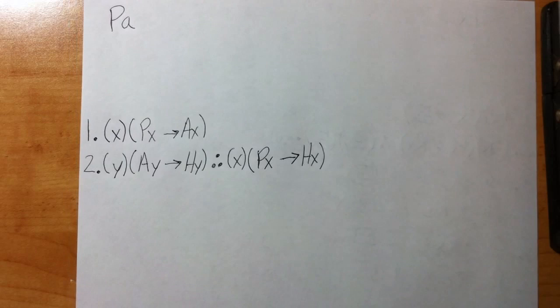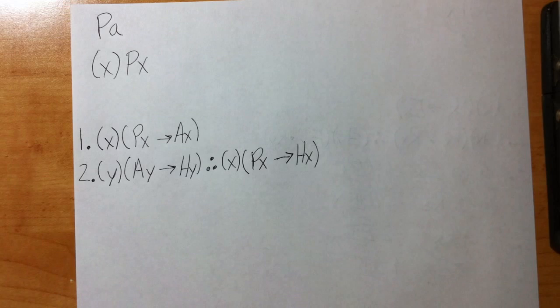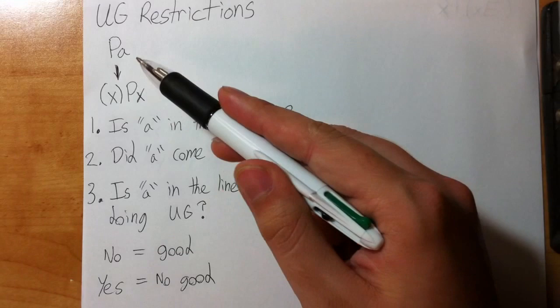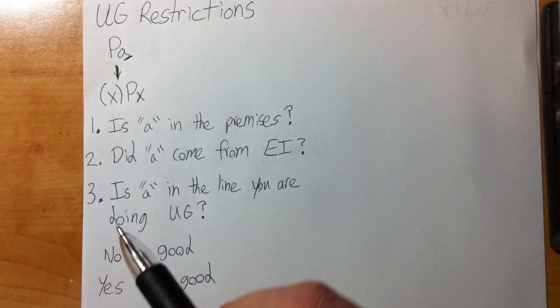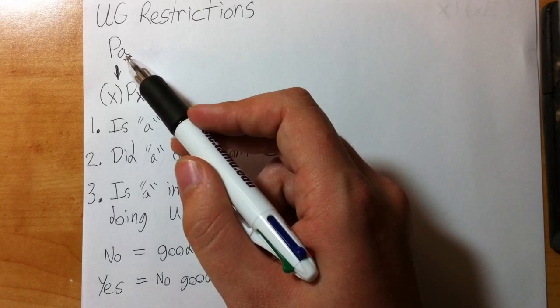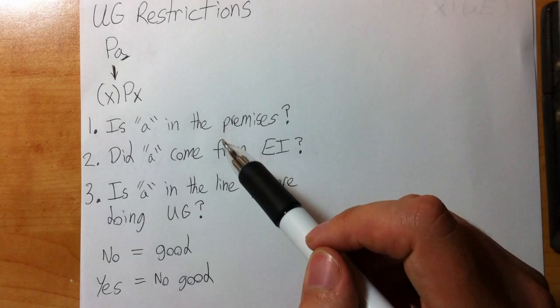EI before UI. So let's move on to our next rule: UG, which also has some restrictions. UG is a lot like EG except we have some restrictions associated. We could take something that looks like this and change it into this, as long as we ask ourselves these three questions. So UG says you can go from this to that, but you have to ask yourself: does a occur in the premises of an argument? Two, did you get a or whatever letter you're doing UG on—did that come from using EI? If EI is not in your proof then obviously the answer is no, but if a came into the proof through using EI, you can't use UG on it.